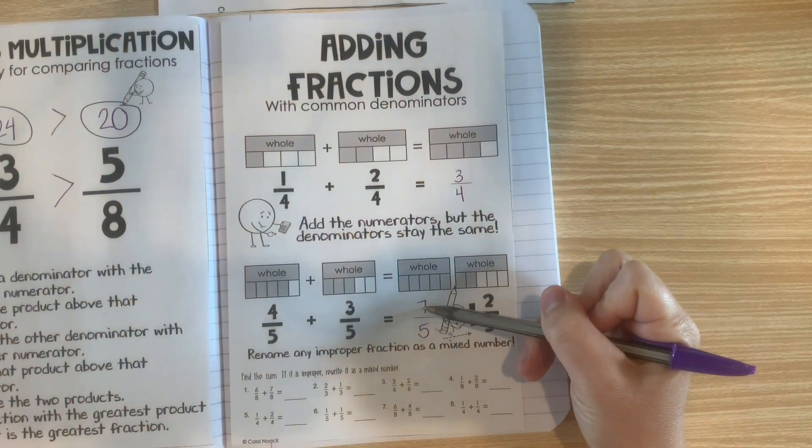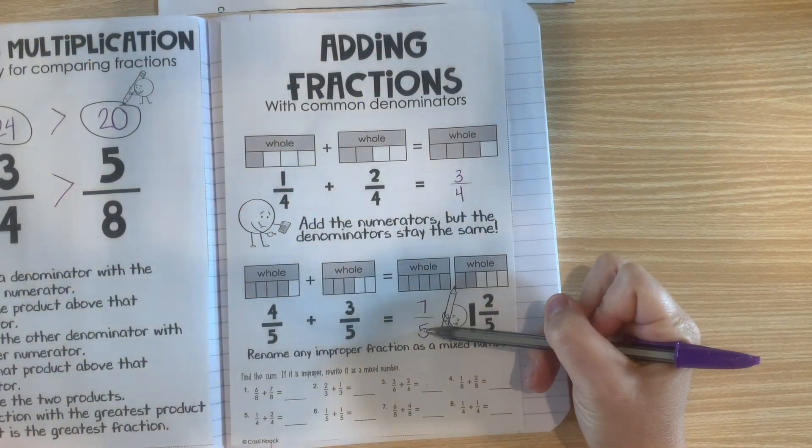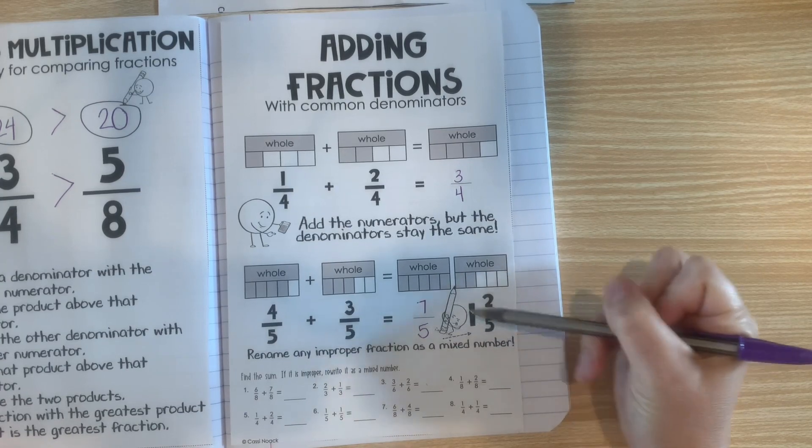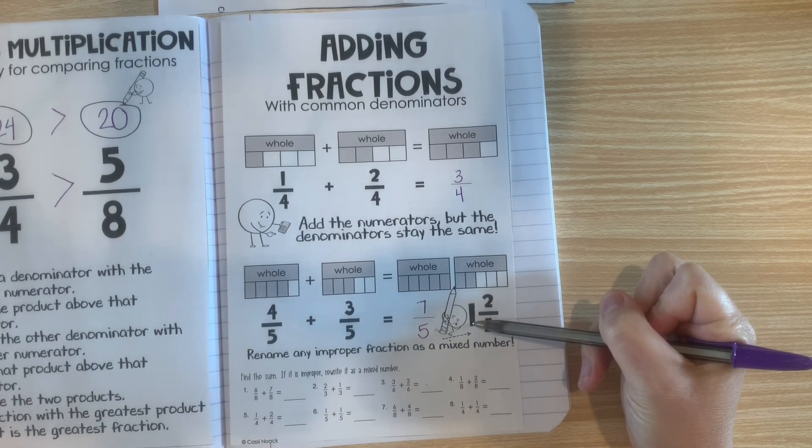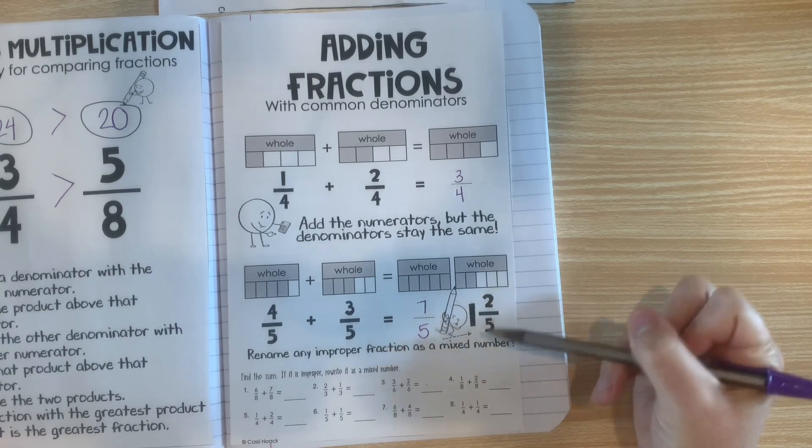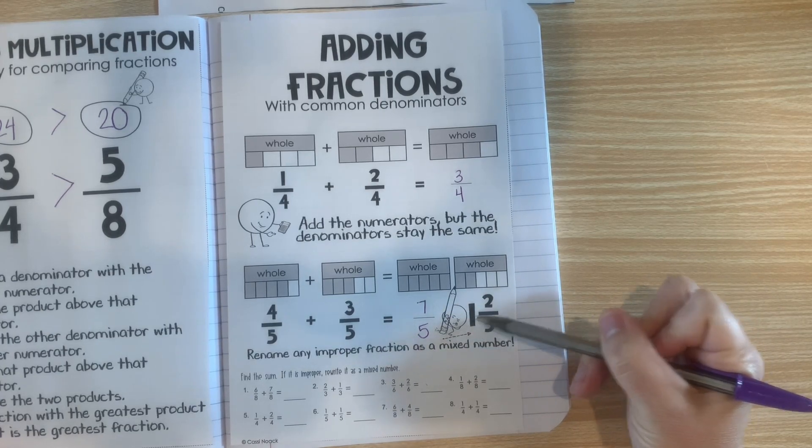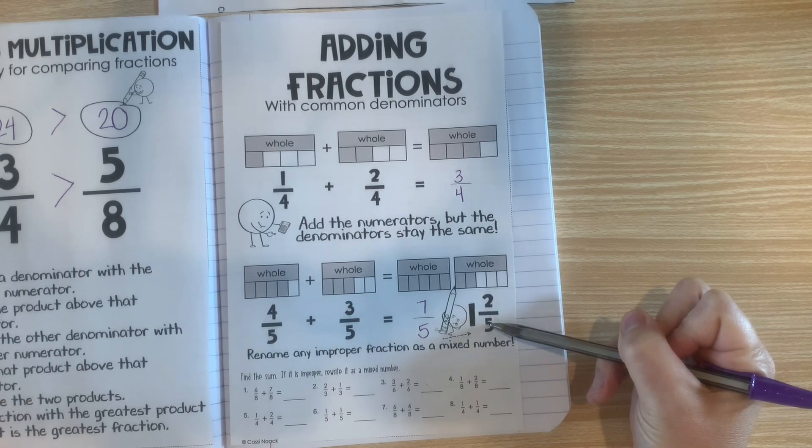Here we have 7 divided by 5. Well, 5 will go into 7 one time with a remainder of 2. So, our mixed number is 1 and 2 fifths.